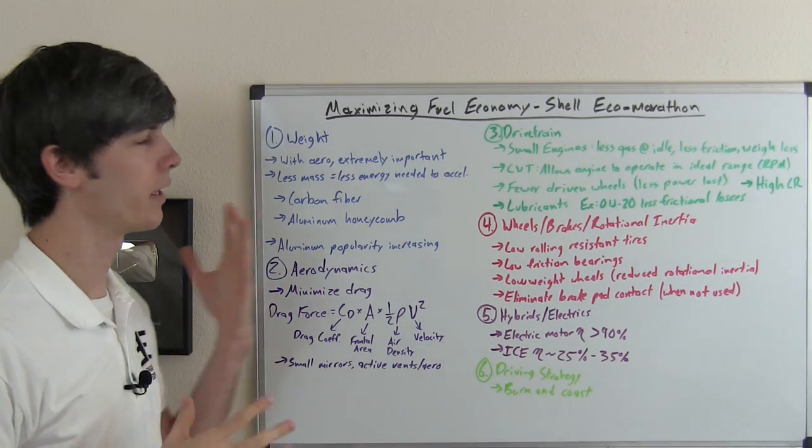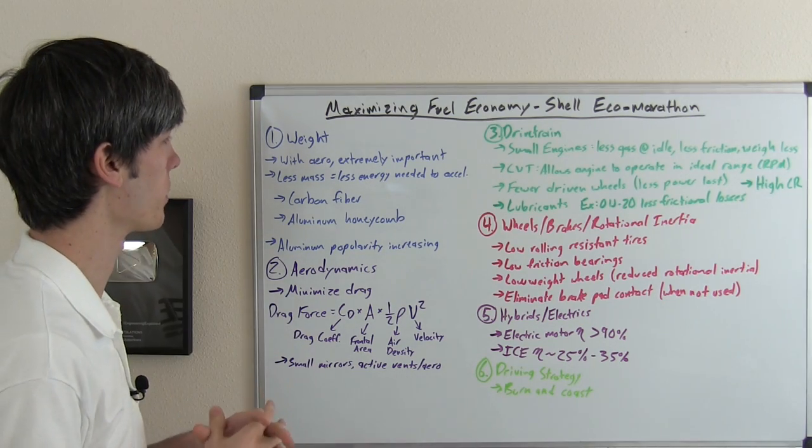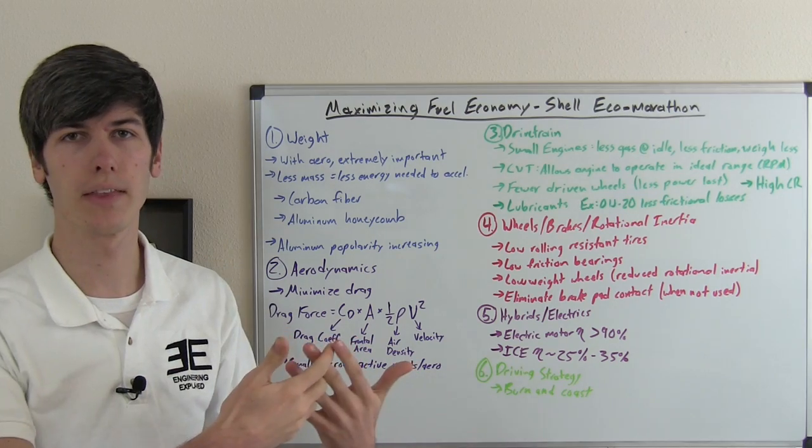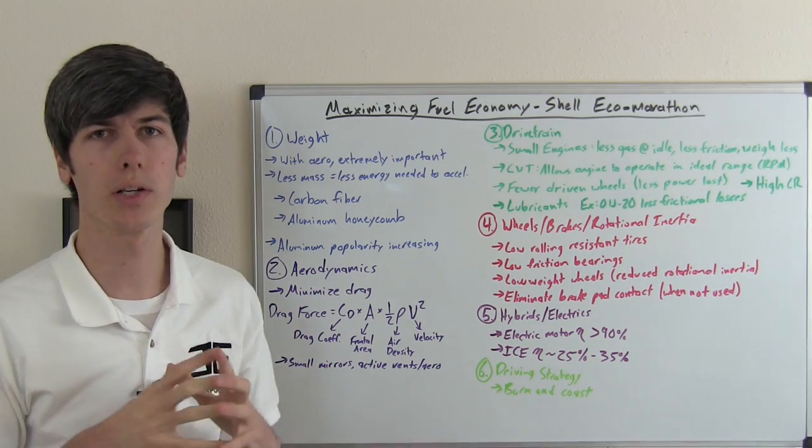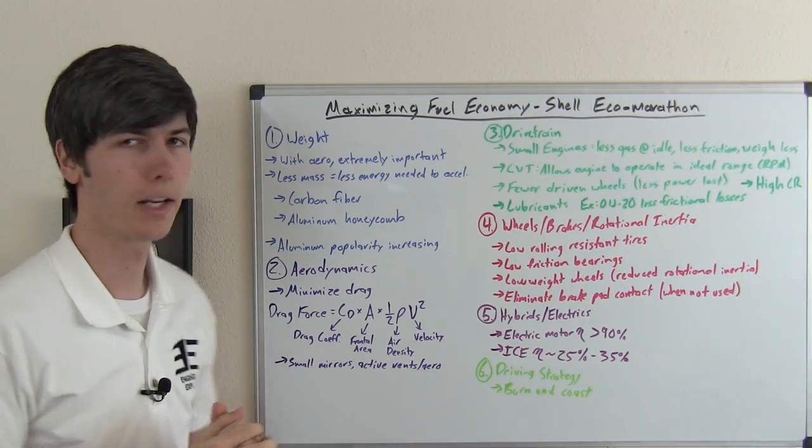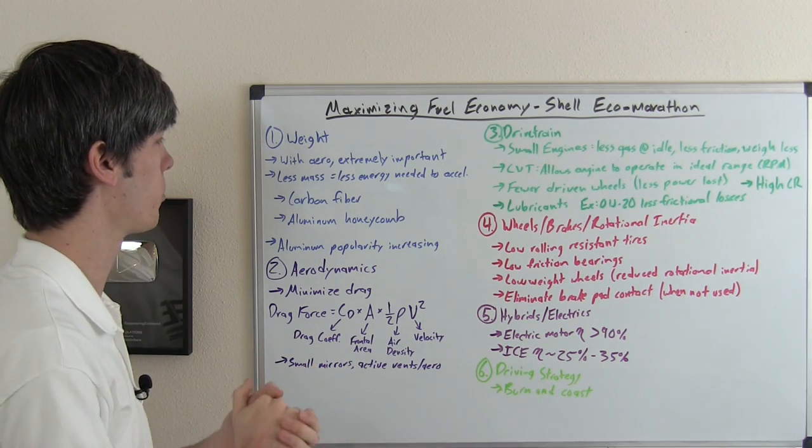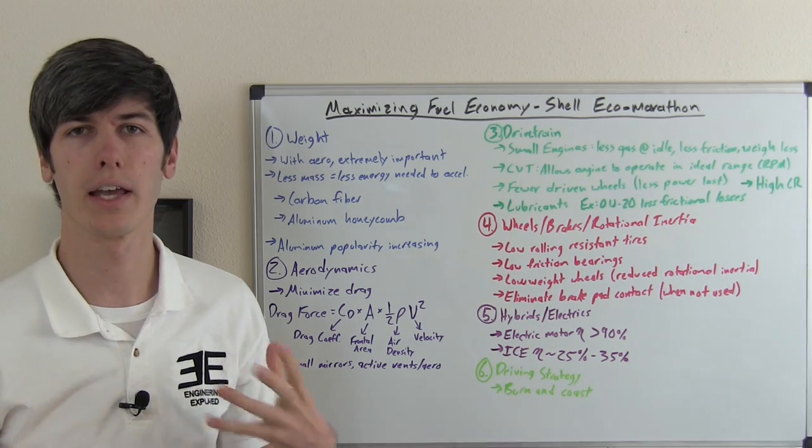Now the first topic I'd like to chat about is weight, as it's one of the most important ones in order to maximize fuel economy. A car that weighs less requires less energy to accelerate that mass and therefore will get better fuel efficiency. This is one of the most critical factors along with aerodynamics, which of course plays a much bigger role as you get into higher speeds. So what are some of the ways that a car can reduce its weight?